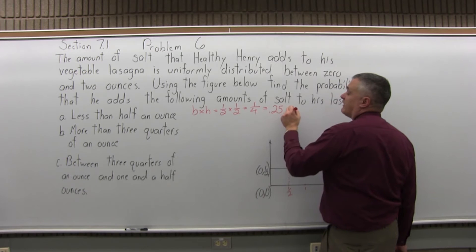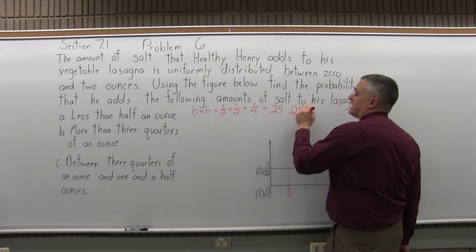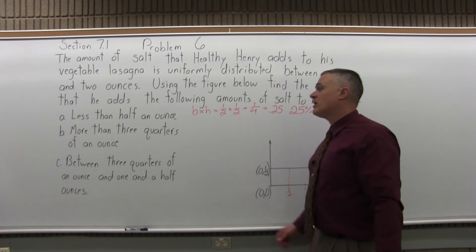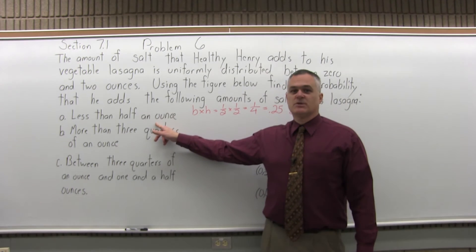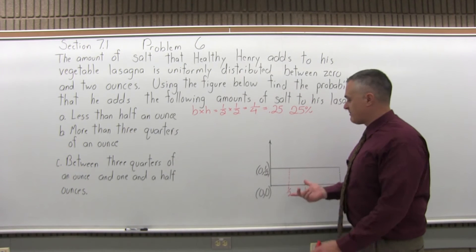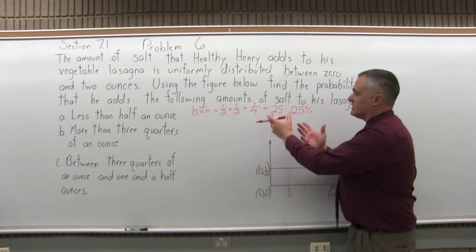Which you can write as 0.25, which means 25%. There's a 25% probability that Healthy Henry adds less than half an ounce of salt to his vegetable lasagna. And we found that by finding the area on the graph, which was 0.25.